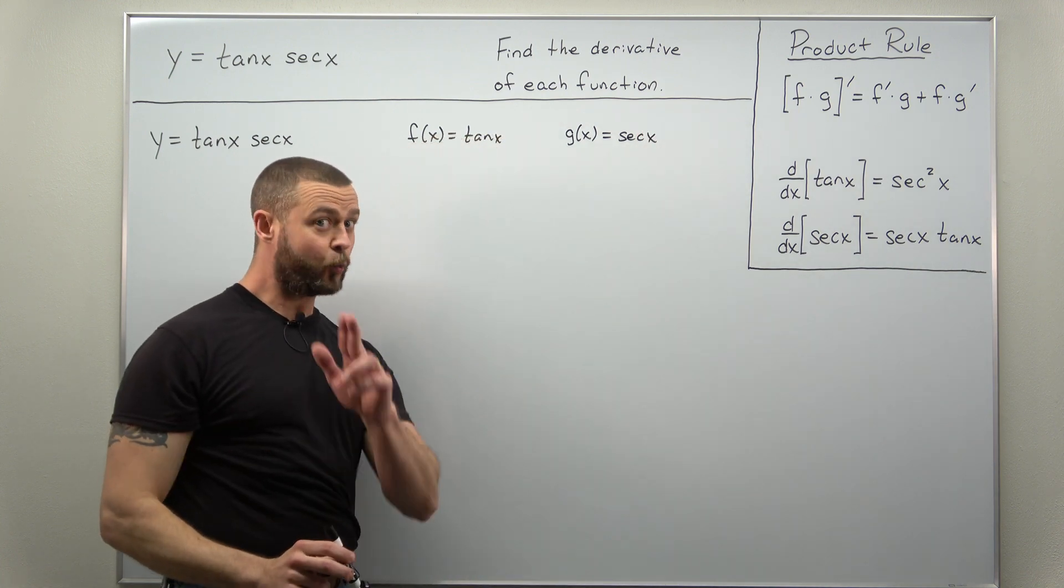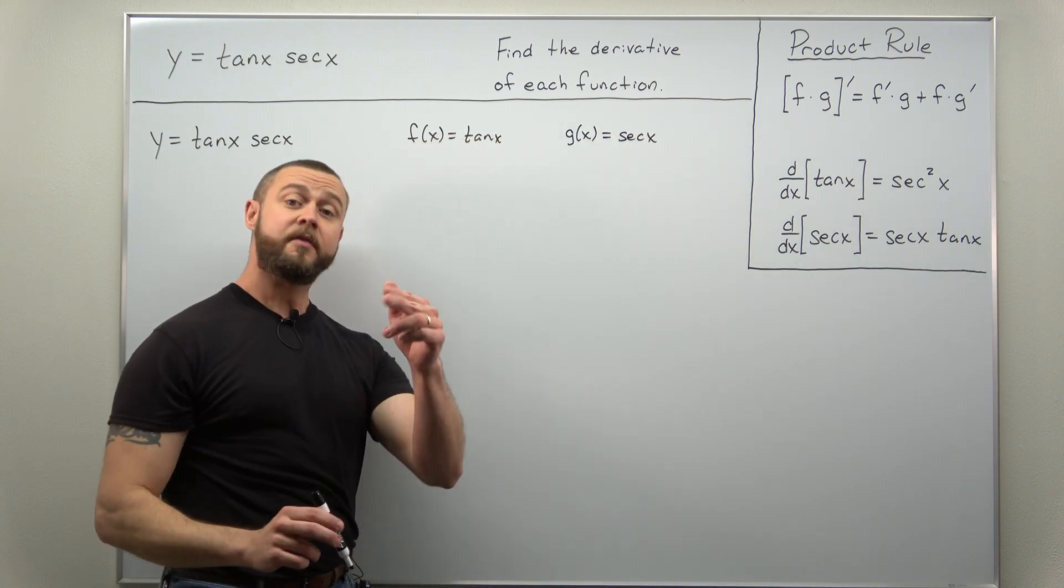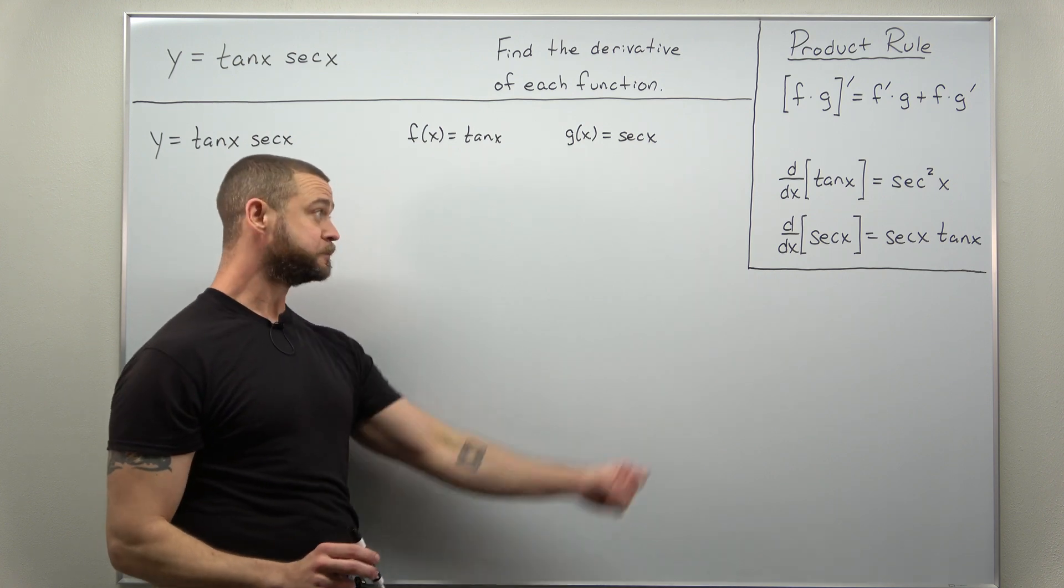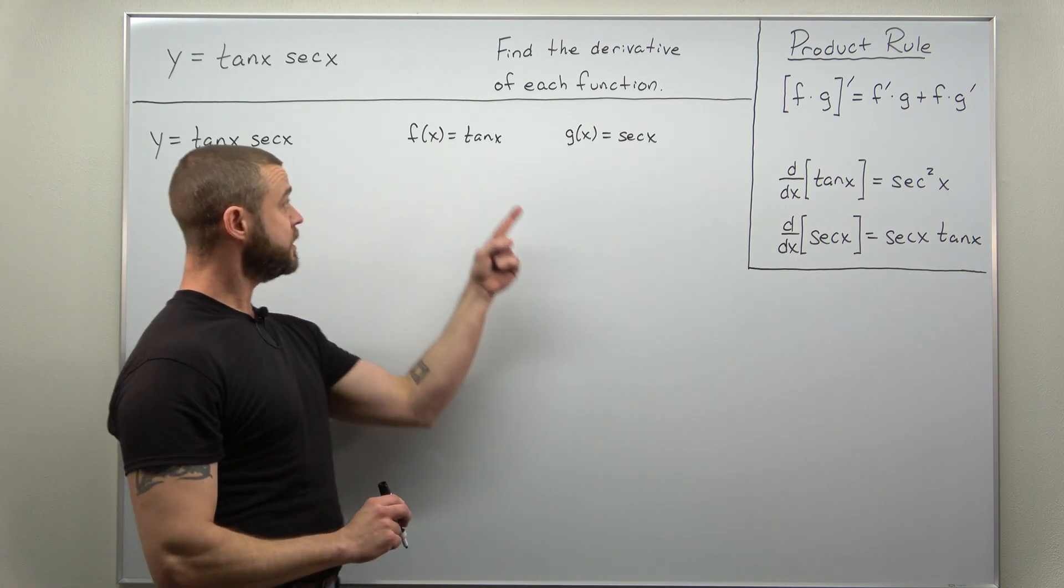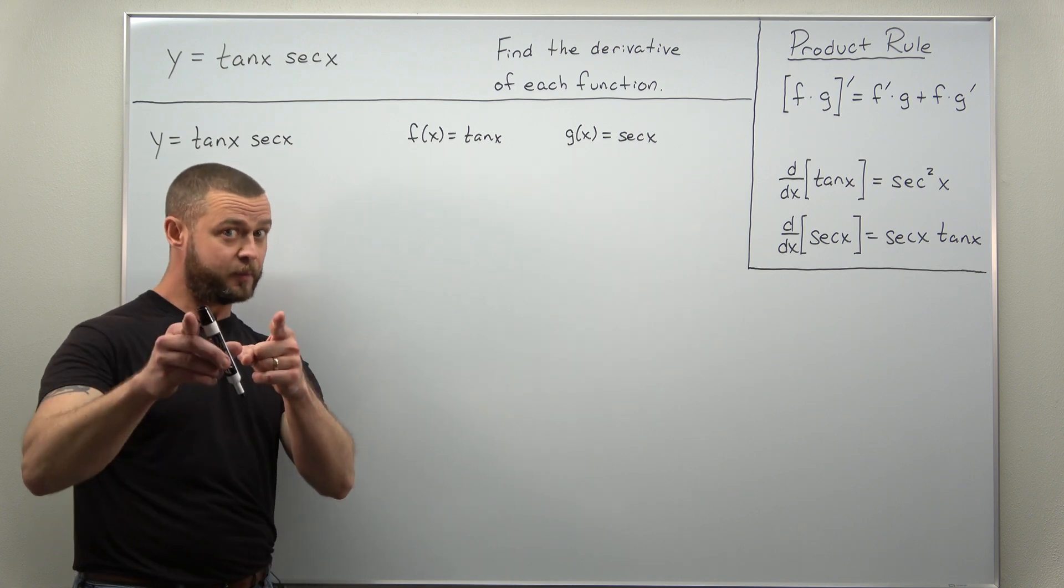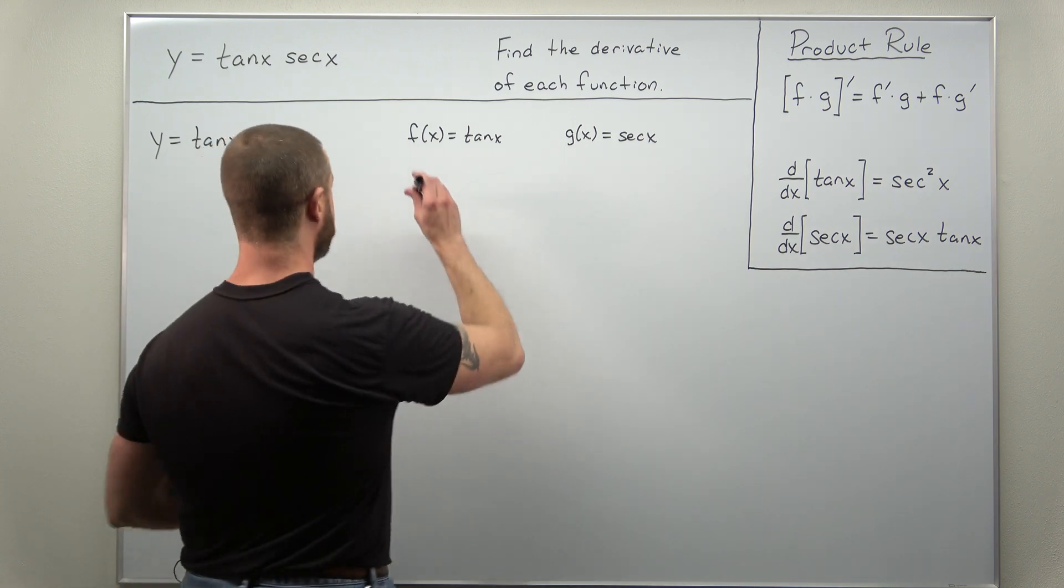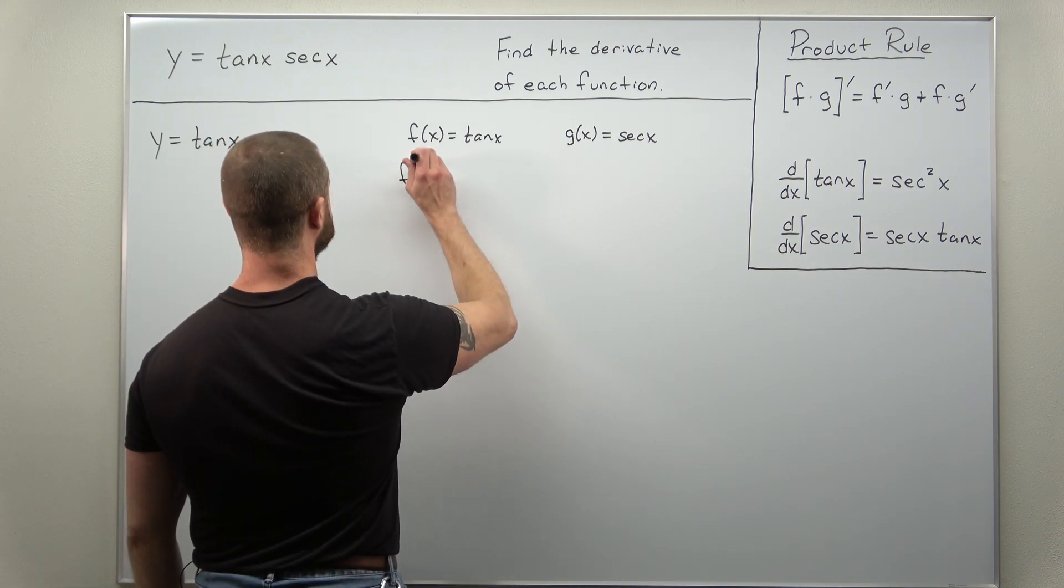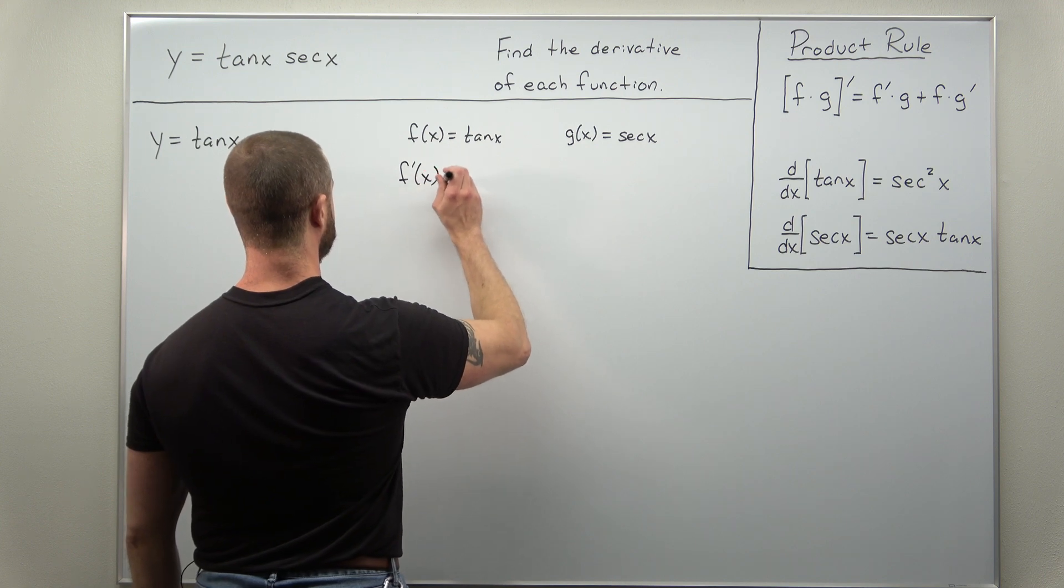Alright, and the derivatives, while a little bit more complicated than the derivatives of sine and cosine, they're straightforward. The derivative of tangent - make sure you know that that's secant squared of x - so f prime comes out to secant squared of x.